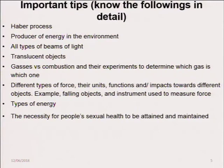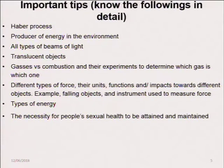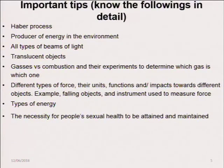When it comes to detailed questions — for example, describe, illustrate, define, or contrast — there are things you have to look at, because the probability for this kind of question to be asked is high. For example, you should know the process and producers of energy in the environment. You should also know the types of beams of light — converging, diverging, and others — and know how to describe, differentiate, and discuss them. Know gases versus combinations and the experiments used to determine which is which — for example, how do you test for oxygen.